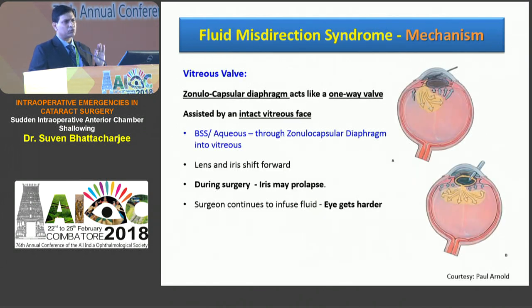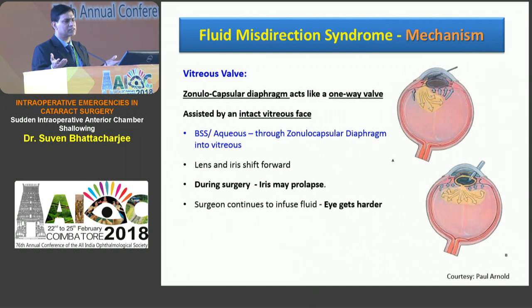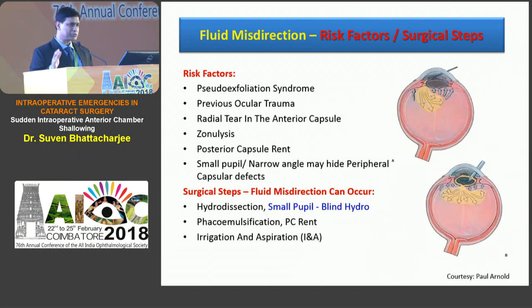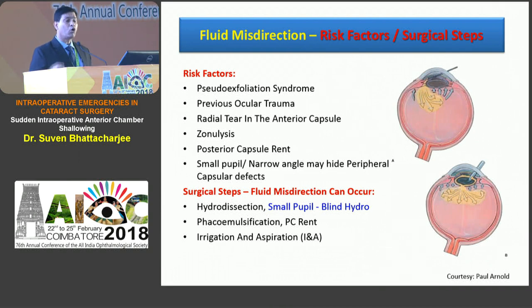The mechanism involves what's called a vitreous valve, where the zonulo-capsular diaphragm acts as a one-way valve. Fluid passes through the zonules into the posterior chamber and pushes up the iris and lens, causing a shallow anterior chamber. This can occur during hydrodissection, I/A, phaco, or through a PC rent. Risk factors include pseudoexfoliation, previous ocular trauma, radial tears in the anterior capsule, zonulolysis, PC rent, small pupil, or narrow angle hiding a peripheral capsular defect. It can happen at practically every step of surgery — most often during hydrodissection with a small pupil, when you're inadvertently pushing fluid through the zonules.